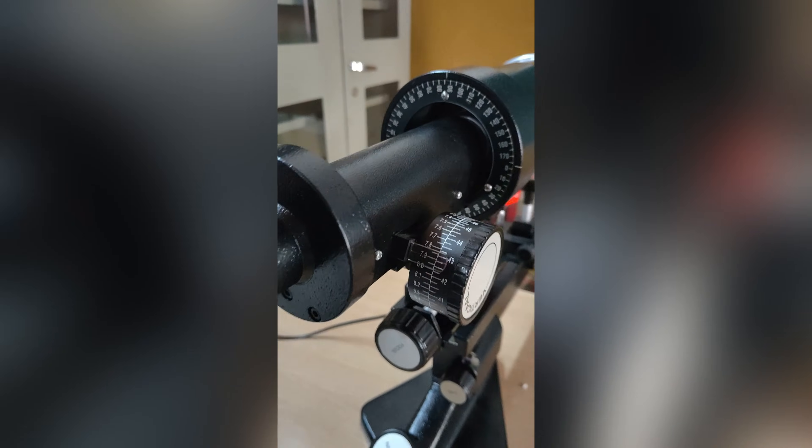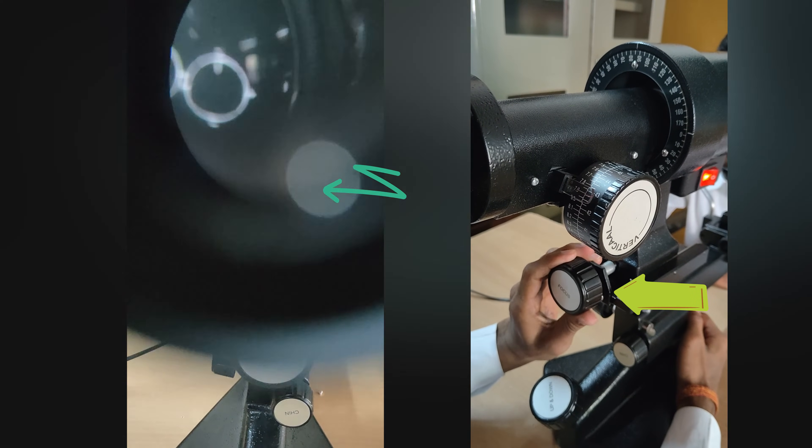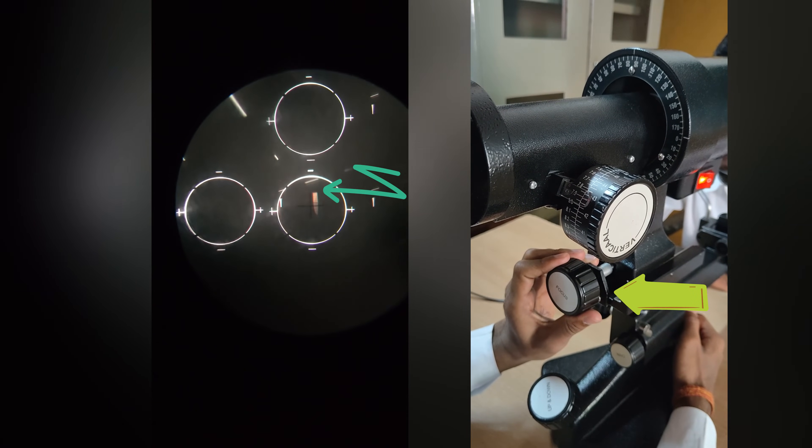Looking through the eyepiece, first focus on the mire to get a clear view. Use the focusing knob to make sure that central mire is single. Once mires are focused, adjust the keratometer such that the reticle is in the center of lower right circle.